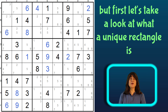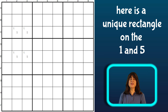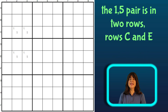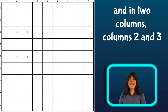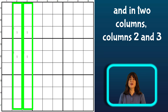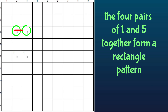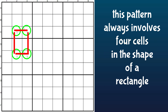Here you can see a unique rectangle on the 1 and 5. The definition of a unique rectangle is that the same two candidates appear in exactly two rows, two columns, and two blocks. Here you can see the 1-5 pair is in two rows — rows C and E — and two columns — columns 2 and 3 — and in two different blocks — blocks 1 and 4. This pattern forms a rectangle, always involving four cells in the shape of a rectangle, or a square, which is a type of rectangle.